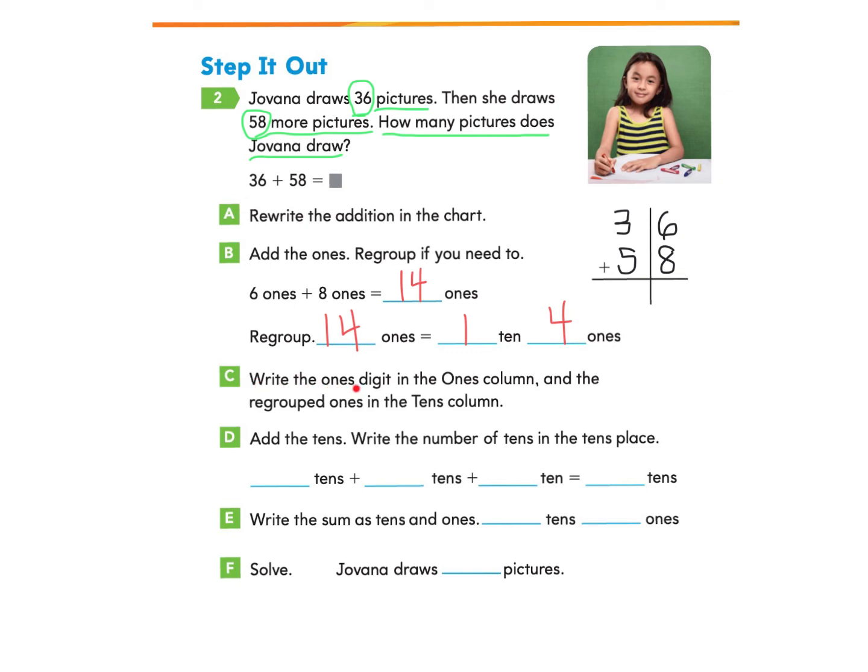Then it asks us to write the ones digit in the ones column and the regrouped ones in the tens column. So just like we've done before, we're going to take this answer and we're not going to write 14 here because this is only supposed to be one spot. We are going to write the four ones in the ones column. Then we're going to take this one ten and we're going to put it in the tens column right here.